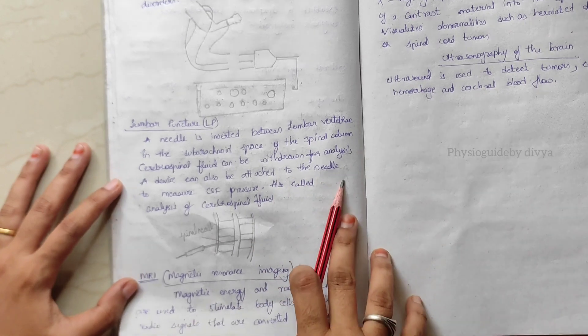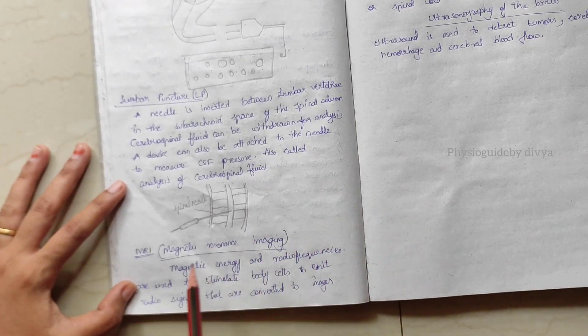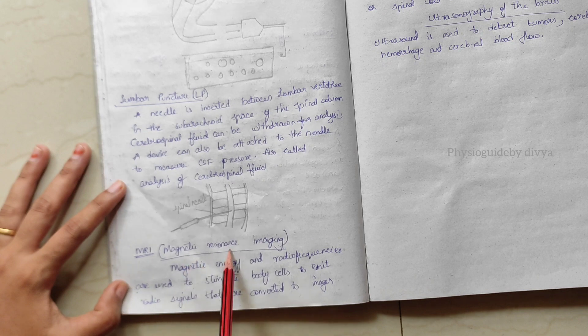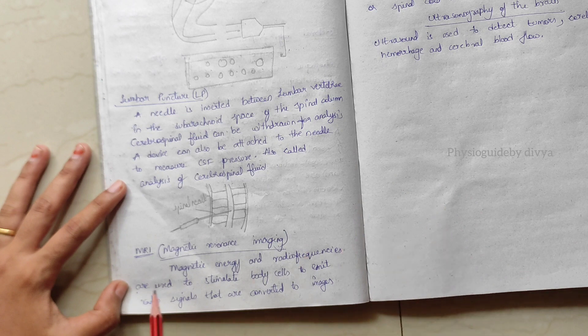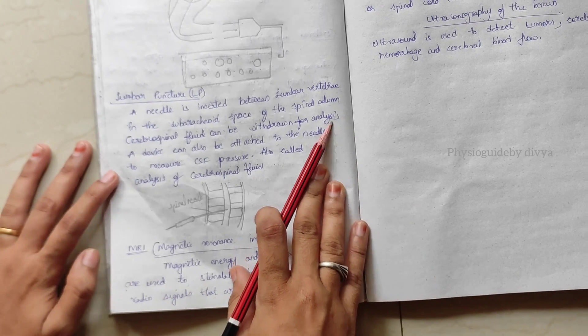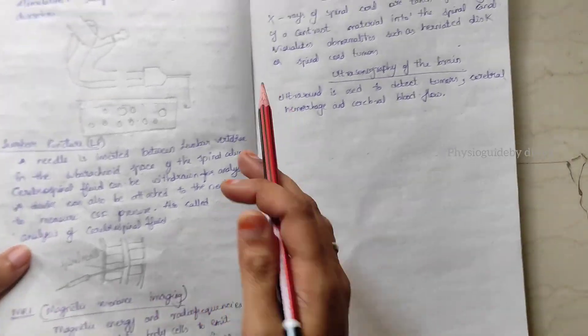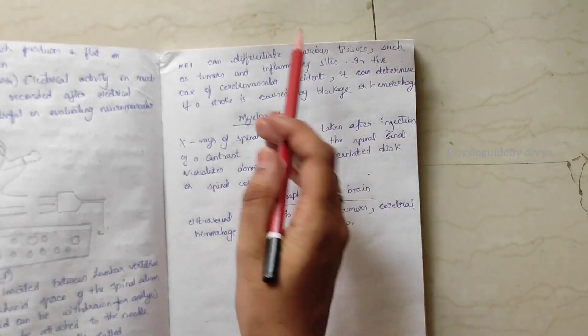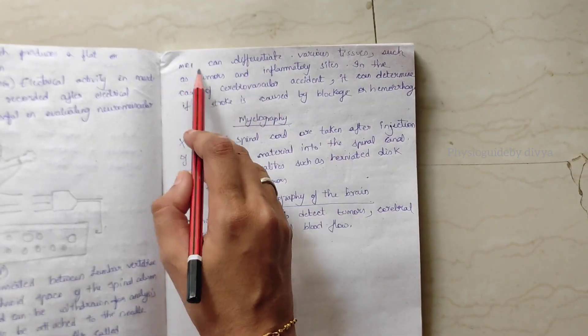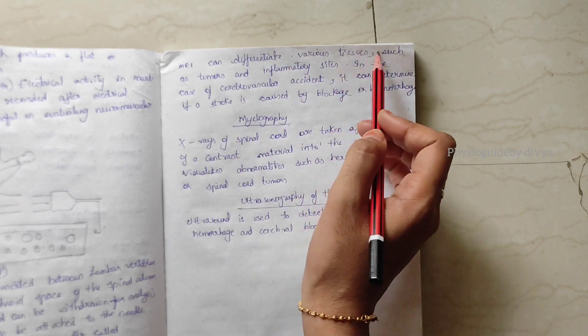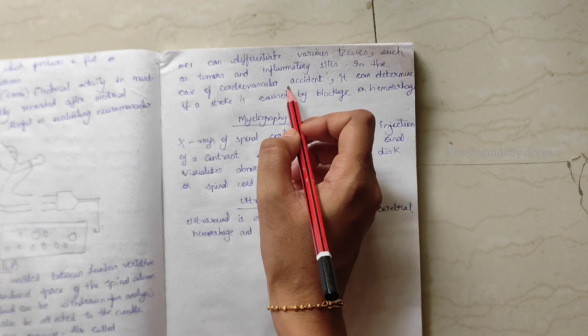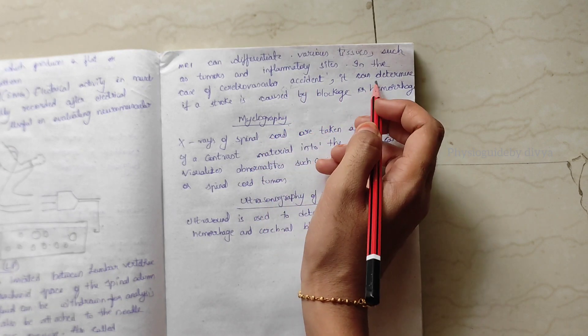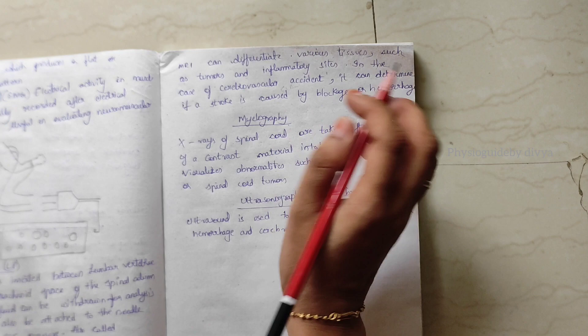MRI, magnetic resonance imaging. Magnetic energy and radio frequencies are used to stimulate body cells to emit radio signals that are converted to images. MRI can differentiate various tissues such as tumors, inflammatory sites. In the case of CVA accident, it can determine if a stroke is caused by blockage or due to hemorrhage. Blockage means blood clot, hemorrhage means blood loss.